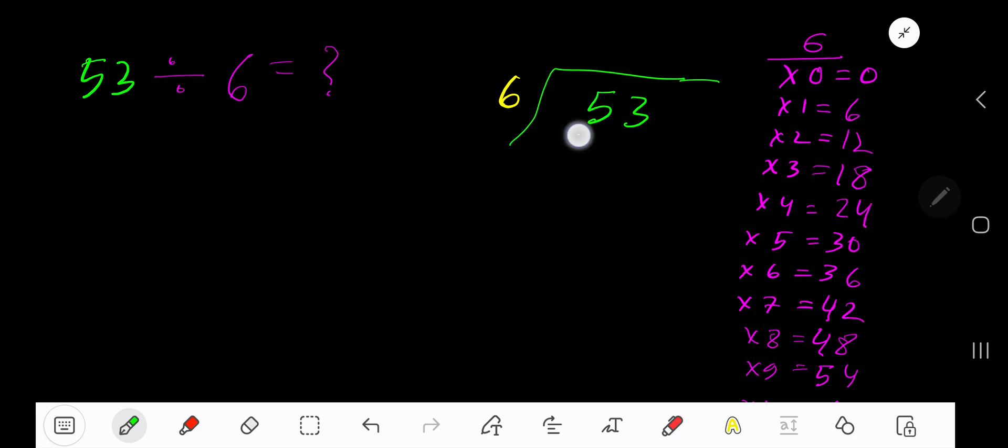This process will continue. 6 goes into 5 how many times? 0 times. 0 times 6 is 0. Subtract 5. Bring down the next digit. 6 goes into 53 how many times?